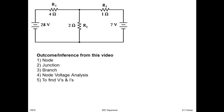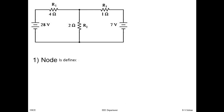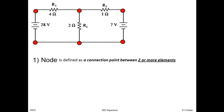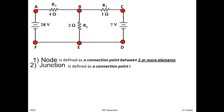A node is defined as a connection point between two or more elements. Looking at the circuit, we have marked the nodes with red dots and named them from A to F. A junction is defined as a connection point between three or more elements. So a node is within a junction — out of these nodes you have to identify which ones are junctions.